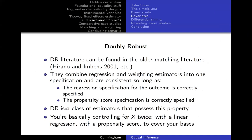Doubly robust is a class of estimators that combine a regression specification for the outcome and a propensity score specification. You do that because you need to satisfy conditional parallel trends, but you don't want to use two-way fixed effects. So you're going to use this approach instead - when you use it, you're not going to have to make a choice between Heckman and Abadie; you're going to do both and it's going to work.